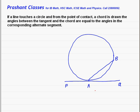The angles between a tangent and a chord, so this angle between a tangent and a chord, is equal to the angles in the corresponding alternate segment. So you have to prove that if we take an angle in the alternate segment.